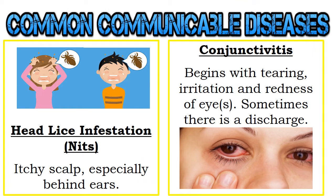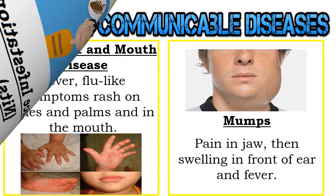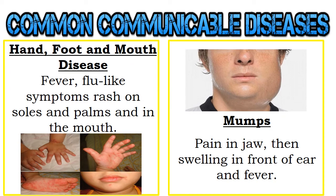Here are the most common communicable diseases. The mode of transmission through direct contact includes head lice infestation, or NITS — you may experience itchy scalp, especially behind the ears. The next is conjunctivitis, which begins with tearing, irritation, and redness of eyes, and sometimes there is a discharge. Another direct transmission is hand, foot, and mouth disease — you may have fever, flu-like symptoms, rash on soles and palms, and in the mouth. The next is mumps — you may feel pain in the jaw, swelling in front of the ear, and fever.